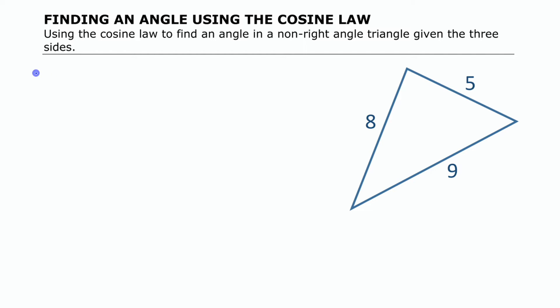So you can approach this two ways. One way is to use the standard way you see the cosine law written, and then just realize that this is what you're solving for, the angle there, and work backwards to solve it.